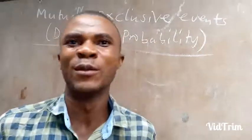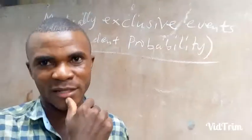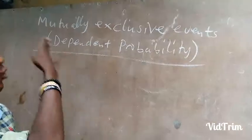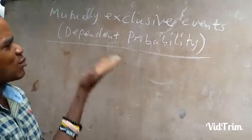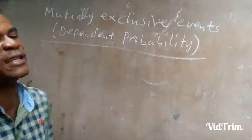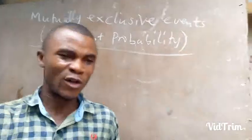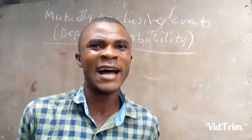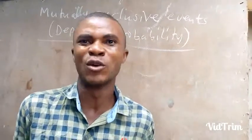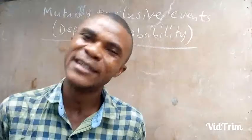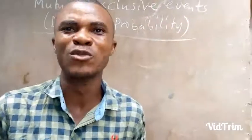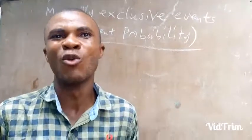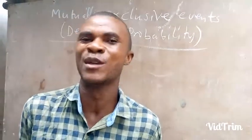We look at the second phase of probability, which is the mutually exclusive event, also known as dependent probability. Mutually exclusive event: two events are said to be mutually exclusive when both of them will not occur at the same time. That means you will not be able to perform the two events at the same time. Any two events that will not go on at the same time, you call that a mutually exclusive event.